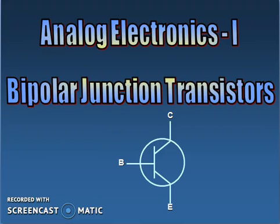Welcome to the lecture series on Bipolar Junction Transistors, also known as BJTs. A BJT is a solid state device for amplifying, controlling and generating electrical signals. This BJT was developed by John Bardeen and Walter Brattain in the year 1947. Further research was carried out by William Shockley and a new device, MOSFETs, was developed in 1951.